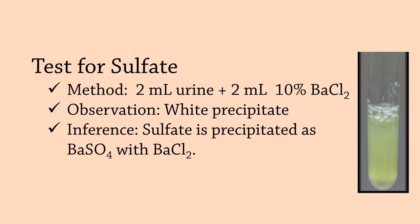Test for sulfates: Sulfate is derived from the sulfur-containing amino acids. About 85–95% of sulfur is excreted as inorganic sulfate and the rest as ethereal sulfates. In this test, sulfate is precipitated as barium sulfate with barium chloride. Take 2 ml of urine and add 2 ml of 10% barium chloride. Note the formation of a white precipitate.